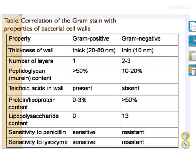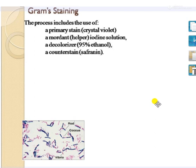Gram-positive bacteria are susceptible to penicillin whereas gram-negative bacteria are resistant. To study the characteristic differences between gram-positive and gram-negative, Christian Gram invented a technique called the gram staining technique to differentiate between them. The process requires four ingredients: primary stain (crystal violet or methylene blue), mordant (iodine solution), decolorizing agent (95% ethanol), and counterstain (safranin).